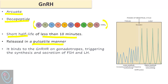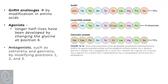GnRH is released in a pulsatile manner. In the first half of the menstrual cycle — the follicular phase — it is more frequent and low amplitude, while in the second half it is less frequent with high amplitude. It binds to GnRH receptors on gonadotrophs to trigger the release of FSH and LH. Modification of the amino acid sequence produces GnRH analogues: a change at amino acid 6 produces GnRH agonists, while changes at amino acids 1, 2, 3, and 6 produce GnRH antagonists. Continuous administration of GnRH analogues results in pituitary down-regulation, preventing release of FSH and LH.